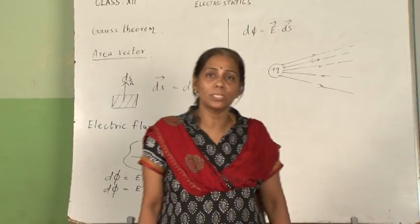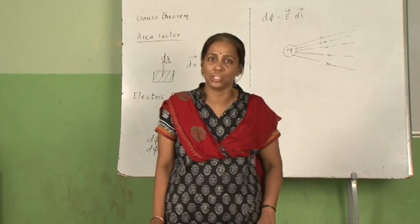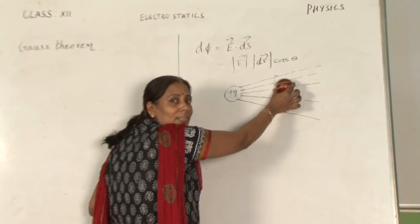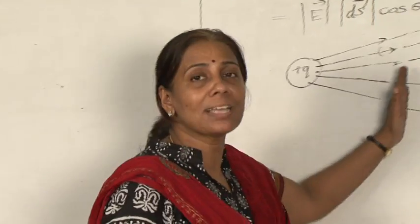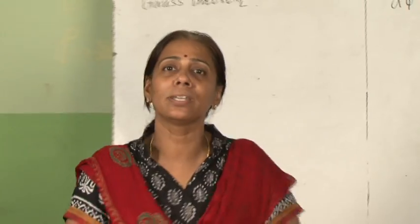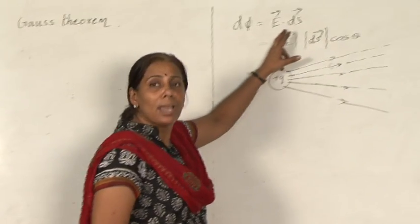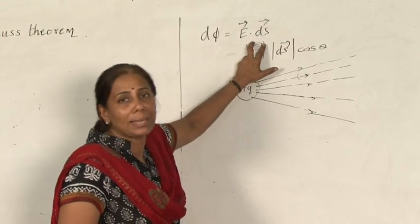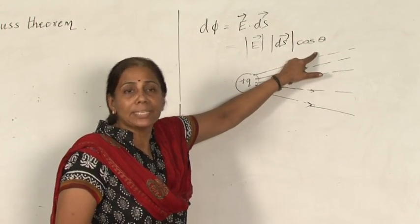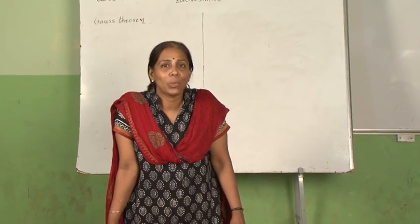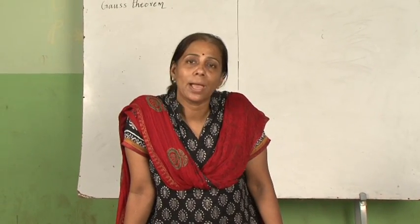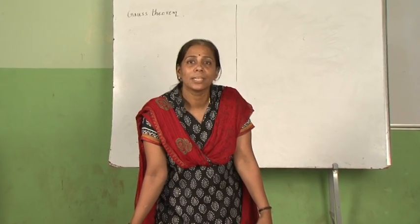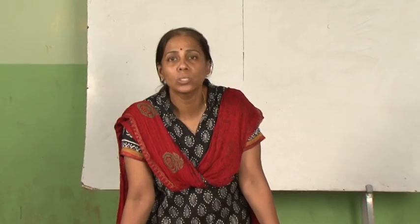After understanding the two important terms, we will now define what is Gauss's theorem and its application. Consider a spherical surface placed outside a charge. The flux linked with the sphere will be 0, because the number of electric field lines entering equals those leaving. When the electric field and area vector are parallel, flux is positive; when they are anti-parallel (cos 180°), flux is negative. Gauss's theorem correlates these terms: the total electric flux enclosed by a surface equals 1/ε₀ times the total charge enclosed.